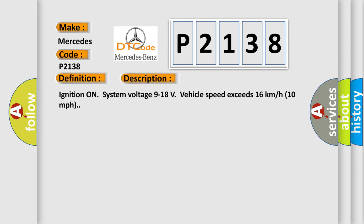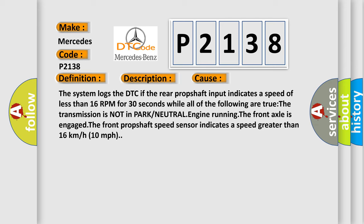Ignition on, system voltage 9 to 18 volts, vehicle speed exceeds 16 kilometers per hour or 10 miles per hour. This diagnostic error occurs most often in these cases: The system logs the DTC if the rear prop shaft input indicates a speed of less than 16 RPM for 30 seconds while all of the following are true: the transmission is not in park or neutral, engine running, the front axle is engaged, the front prop shaft speed sensor indicates a speed greater than 16 kilometers per hour or 10 miles per hour.